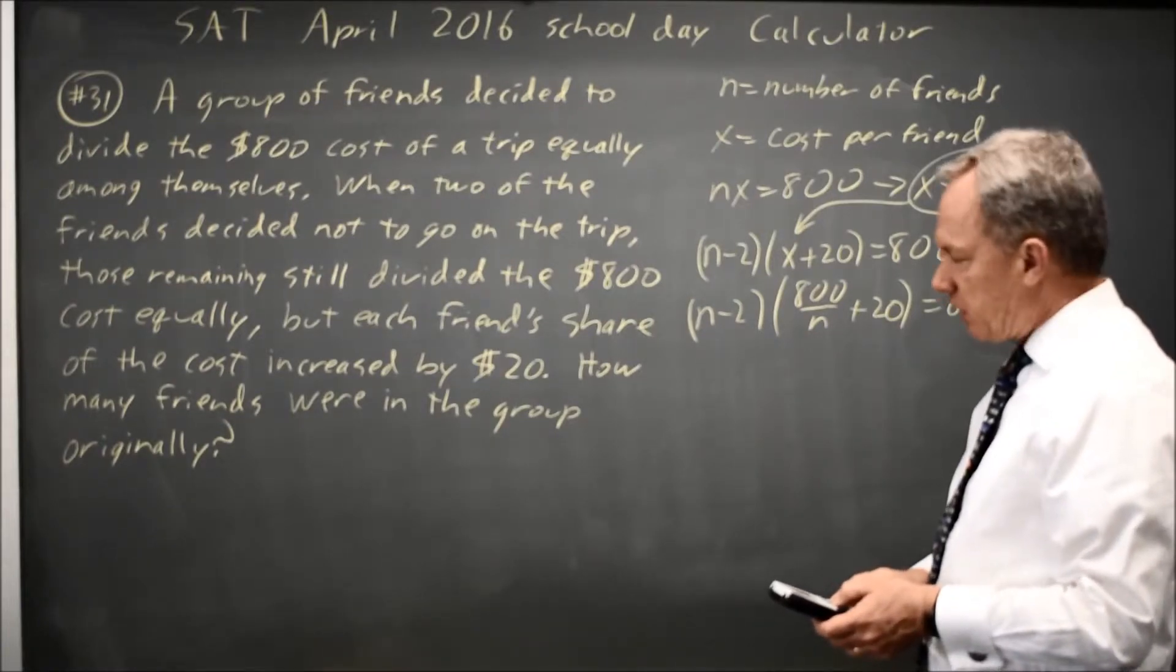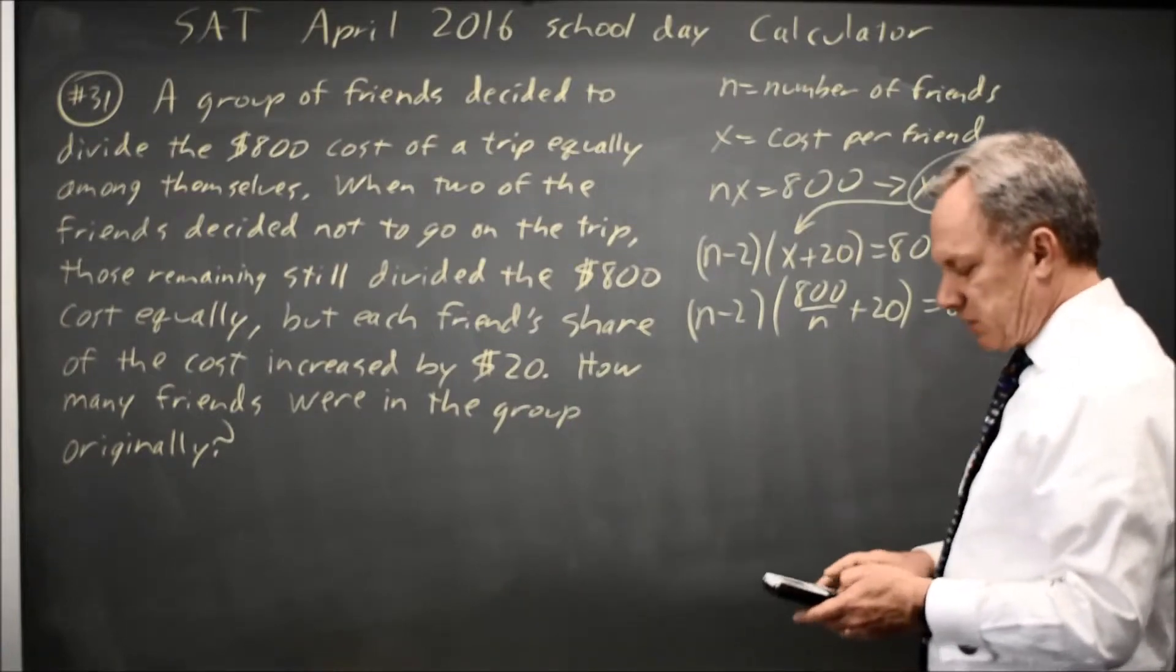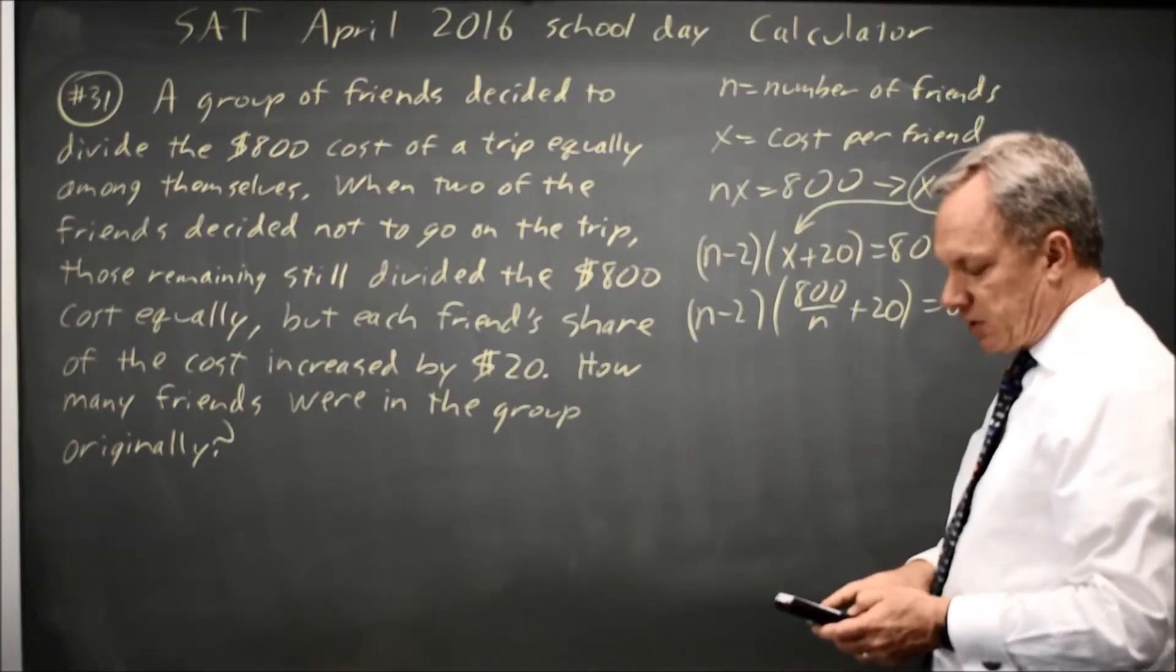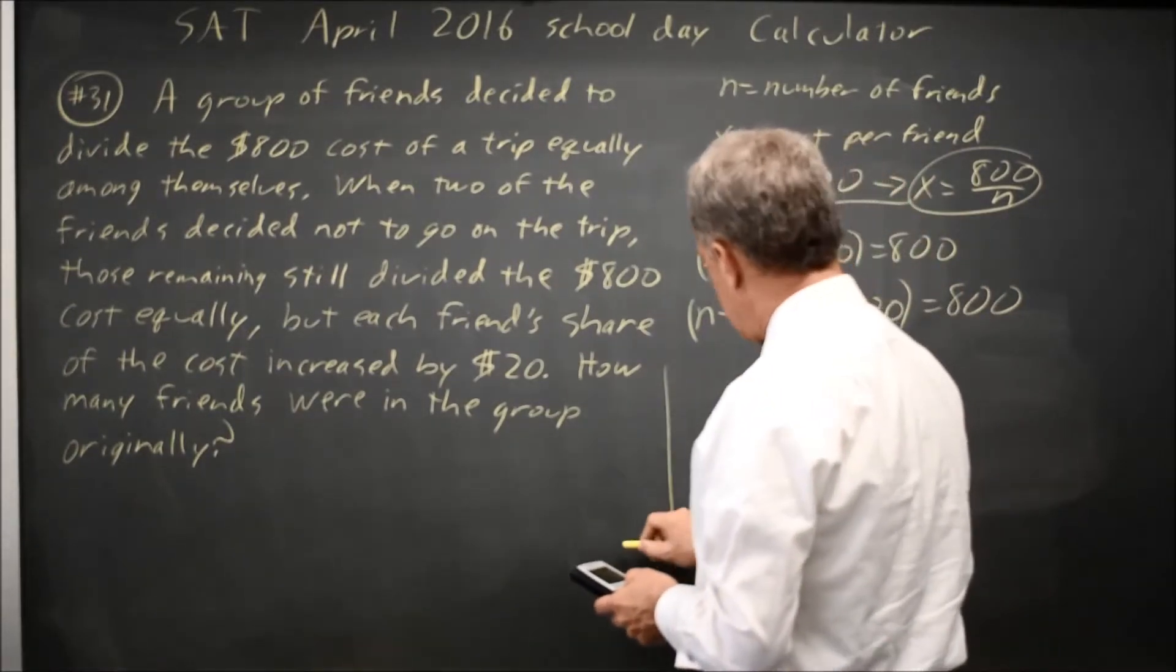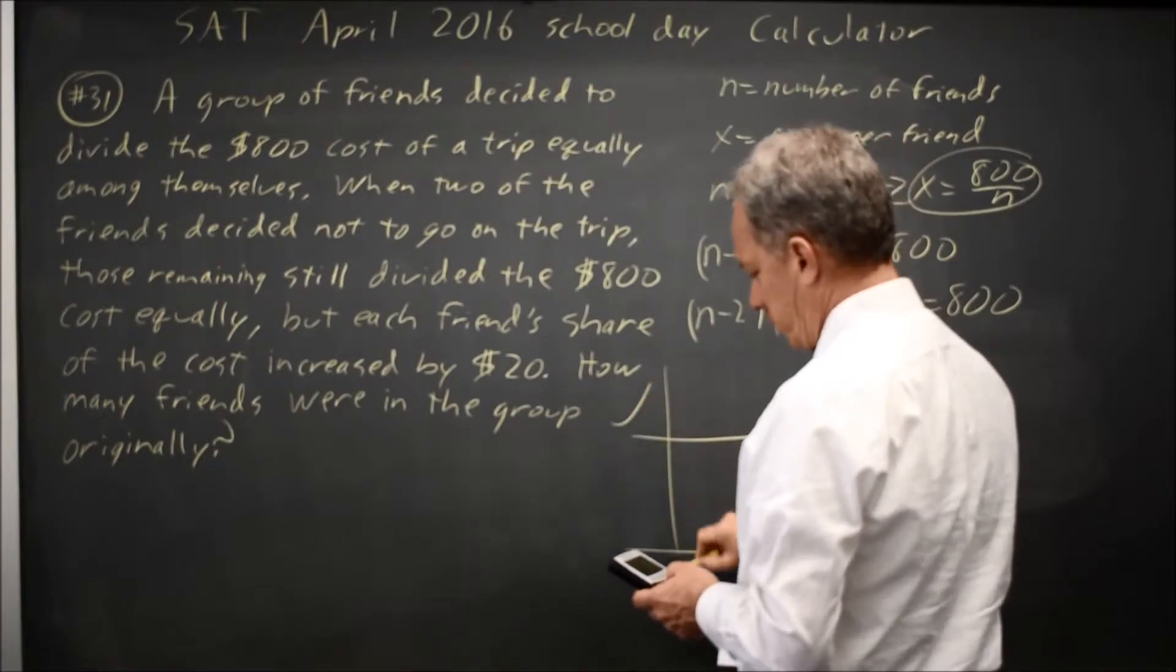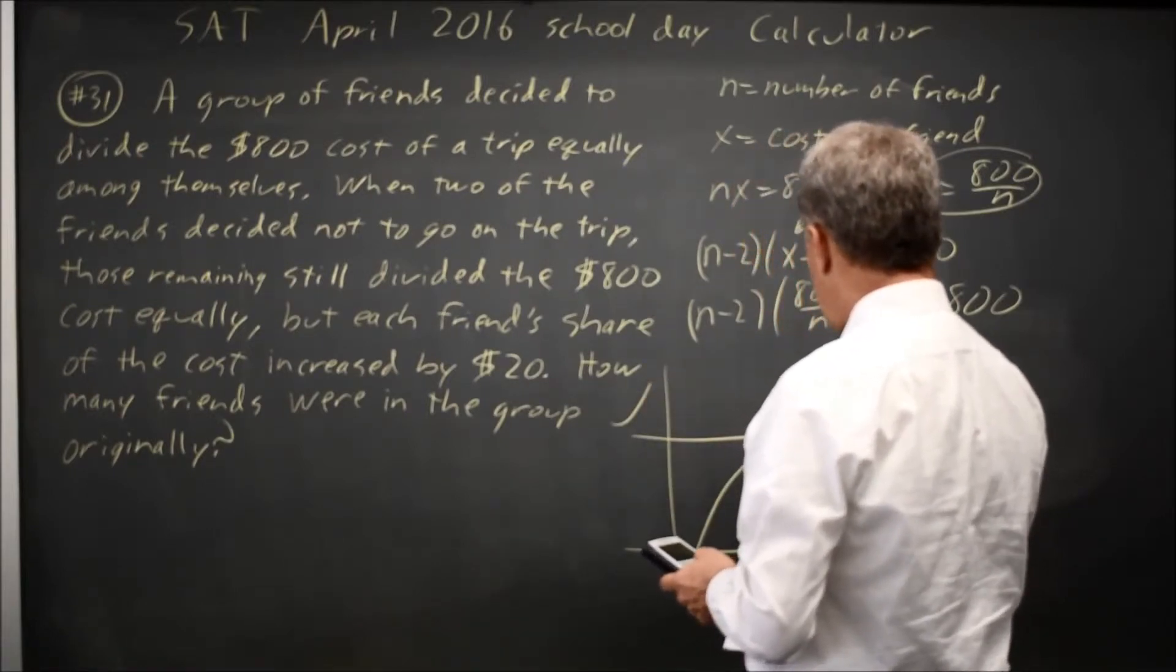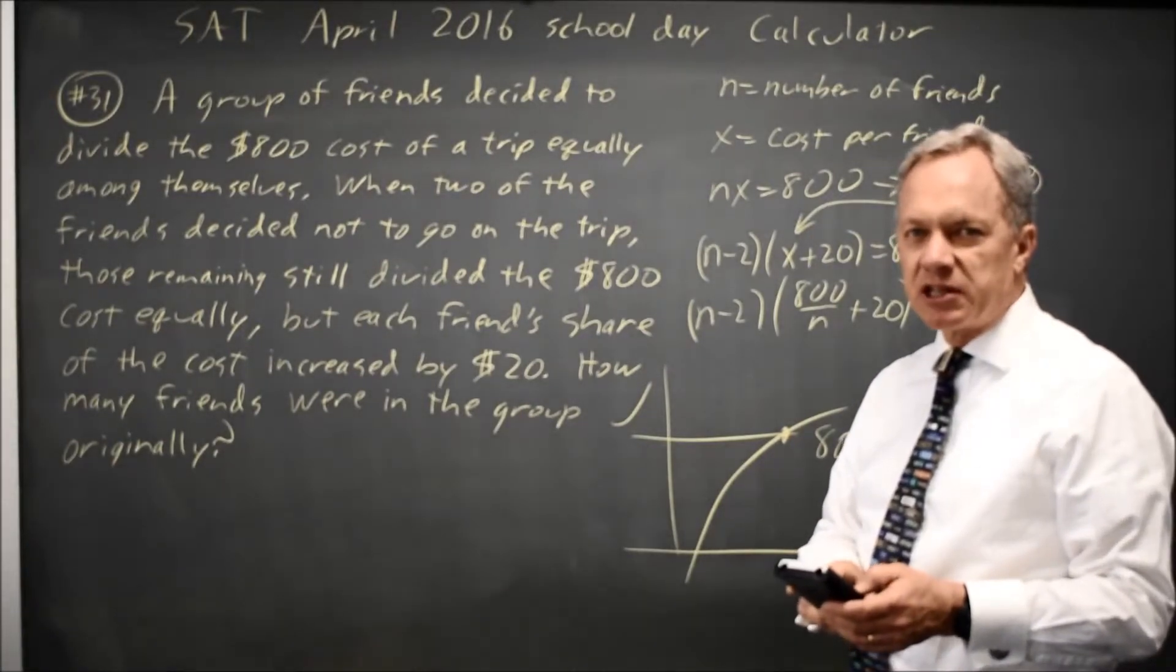So on the left side I have x minus 2, 800 over x plus 20. On the right for y2 I have 800. I hit graph, and the graph looks something like this with a point of intersection here. And I'll use the graphing calculator capabilities to find the point of intersection.